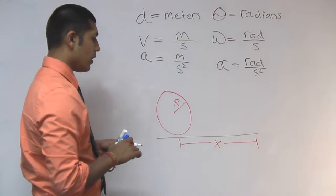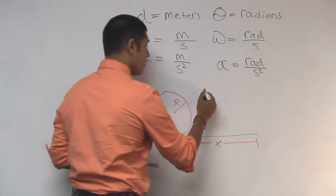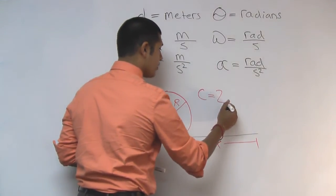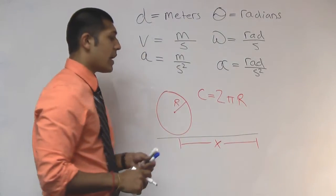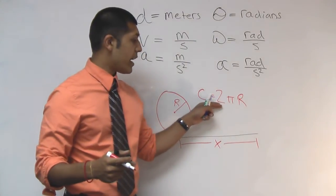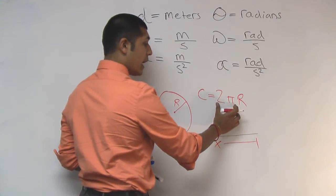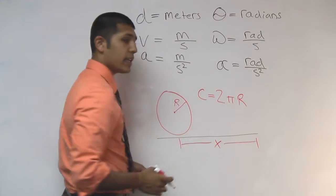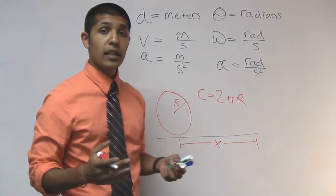We know that the amount of linear distance along the outside of the circle, the circumference, is equal to 2 pi r. And every circle has 2 pi radians in it, which tells us that the linear distance is equal to 2 pi times the radius. The radius is what links our rotational world and our linear world.